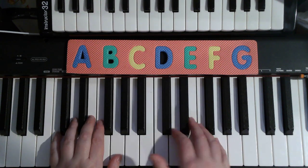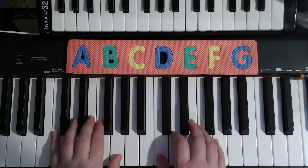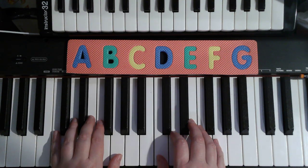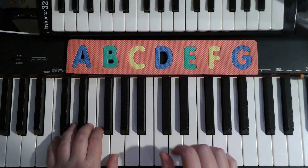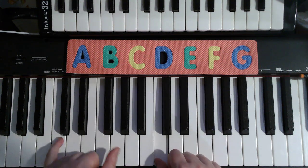We're starting in regular C position, so my right hand thumb is on C and my left hand pinky 5 is on C. We're starting with both hands playing together at exactly the same time. Right hand C and left hand C and G.